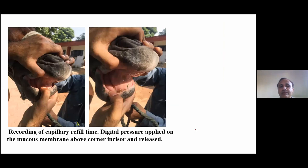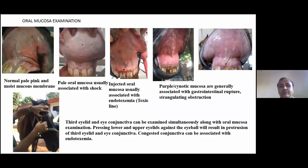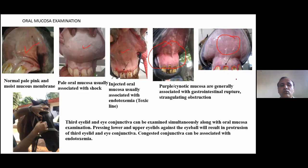On physical examination, first evaluate the mucous membranes — assess color and capillary refill time, and whether they are moist or dry. Normal mucous membranes should be pink and moist. White or cyanotic membranes indicate strangulation. Muddy or violet color indicates endotoxemia. Cyanotic or toxic lines appearing above the incisors on the gingiva indicate the animal is developing septicemia or strangulation — surgery is required immediately.